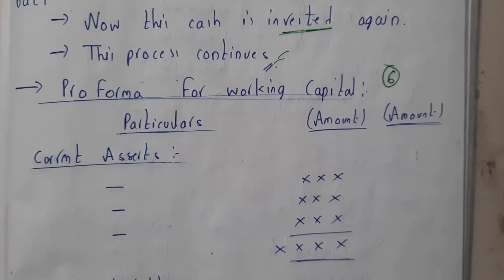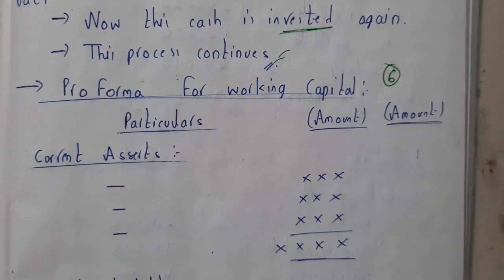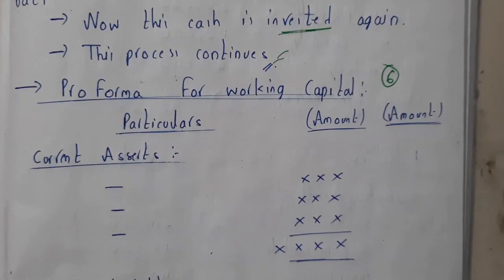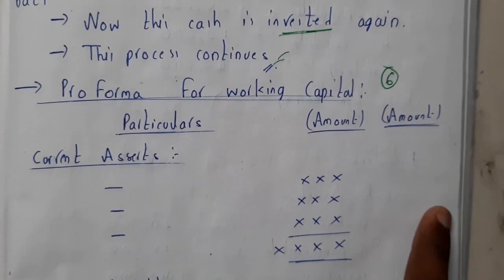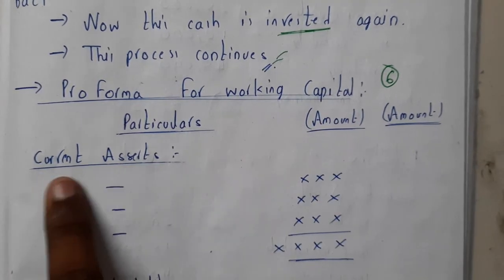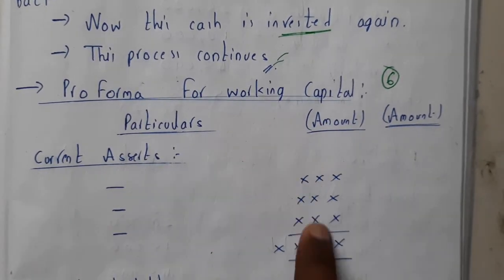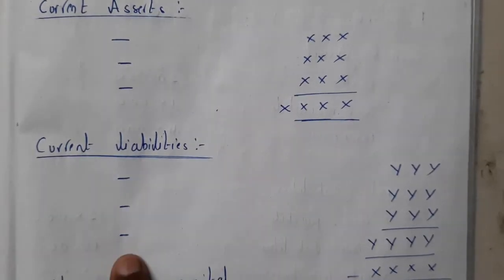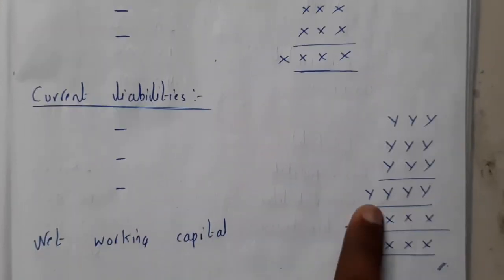Hello guys, we are back with our next lecture. In this lecture, let us go through the problem and pro forma of working capital. Working capital is nothing but current assets minus current liabilities. The pro forma will also consist of it — particulars, amount, and amount. This amount will belong to current assets, so you'll be writing current assets here with those amounts, and totaling it there.